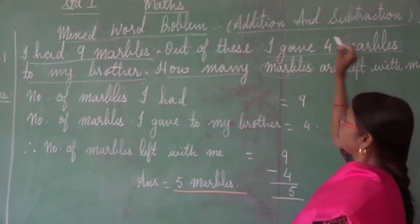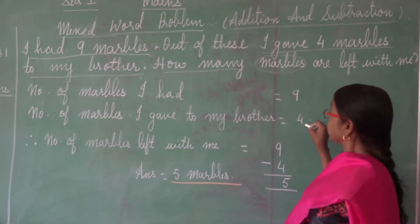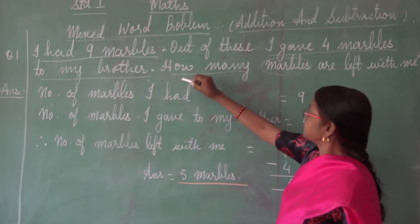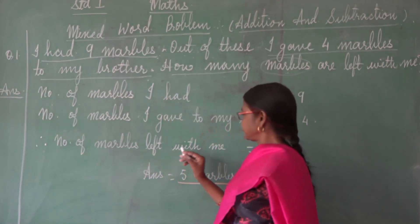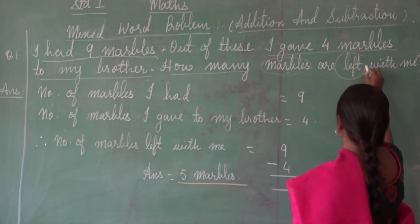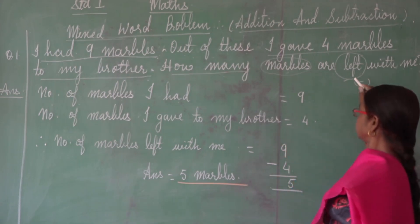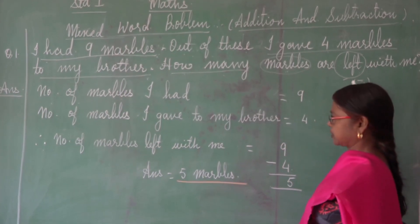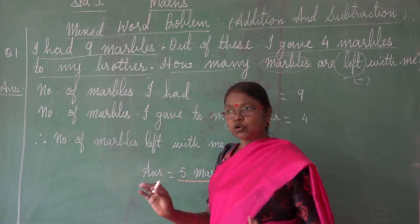The second statement: I gave four marbles to my brother. So, number of marbles I gave to my brother — out of nine marbles, four marbles I gave to my brother. The third statement: how many marbles are left with me? Therefore, number of marbles left with me. You don't write 'total' here. The question is asking 'left.' Left means you have to subtract — minus. You need to catch the words: 'altogether' or 'in all' is for addition, and 'left' means you need to subtract. So we don't write total here. Remember, in subtraction we are not adding. There is no need to write total.